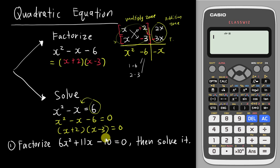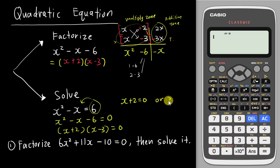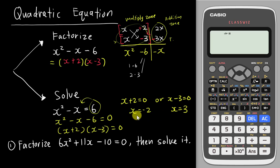Then I want to solve it. I have two brackets multiplied together, so I say x plus 2 equals 0, or x minus 3 equals 0. The first answer will be negative 2, and the second answer will be positive 3. Now I can use the calculator to check my answer.